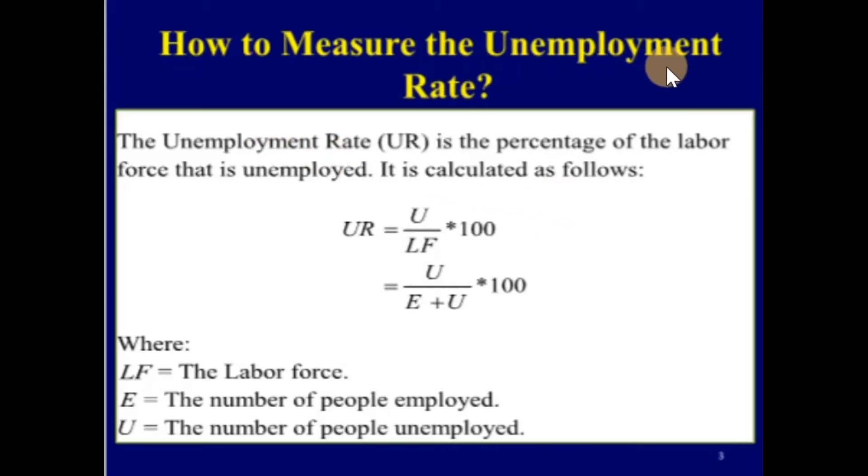How to measure the unemployment rate? The unemployment rate, abbreviated as UR, is the percentage of the labor force that is unemployed. Therefore, UR equals U divided by LF, or UR equals U divided by E plus U.